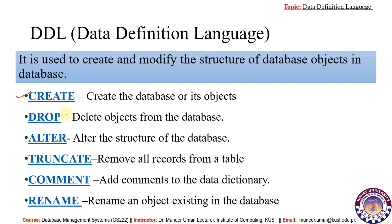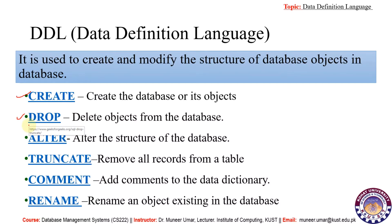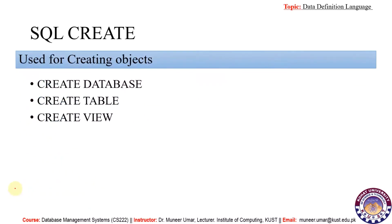Inside DDL we have: CREATE queries, used to create objects or databases; DROP, used to delete objects from the database; ALTER, used to alter the structure of the database; TRUNCATE, used to remove all records from a database table (not the table itself, only the records); COMMENT, just like comments in other programming languages; and RENAME, used to rename an existing object in the database.